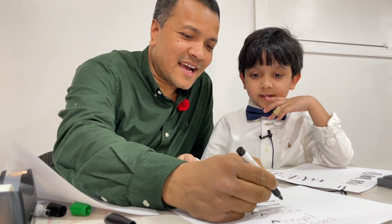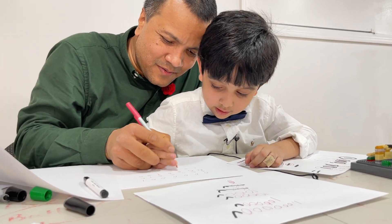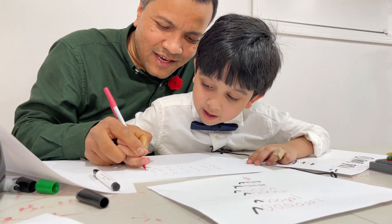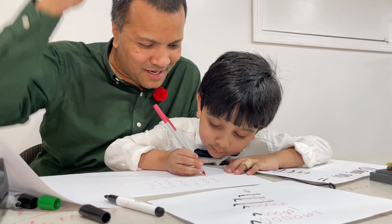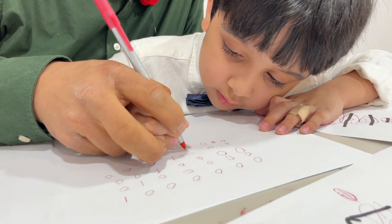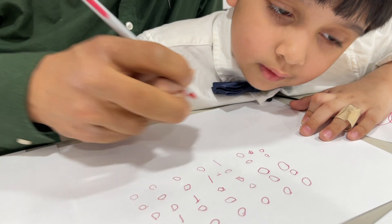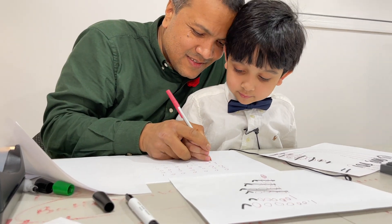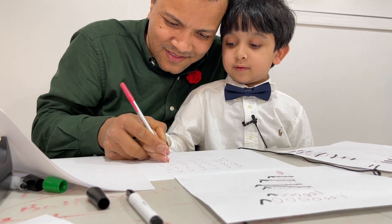Now write one thousand using seven digits. Zero, zero, zero, one, zero, zero, zero — one thousand. Now write ten thousand using seven digits. I'll do it by myself. Zero, zero, one, zero, zero, zero, zero. Now write one hundred thousand using seven digits. Zero, one, zero, zero, zero, zero, zero.